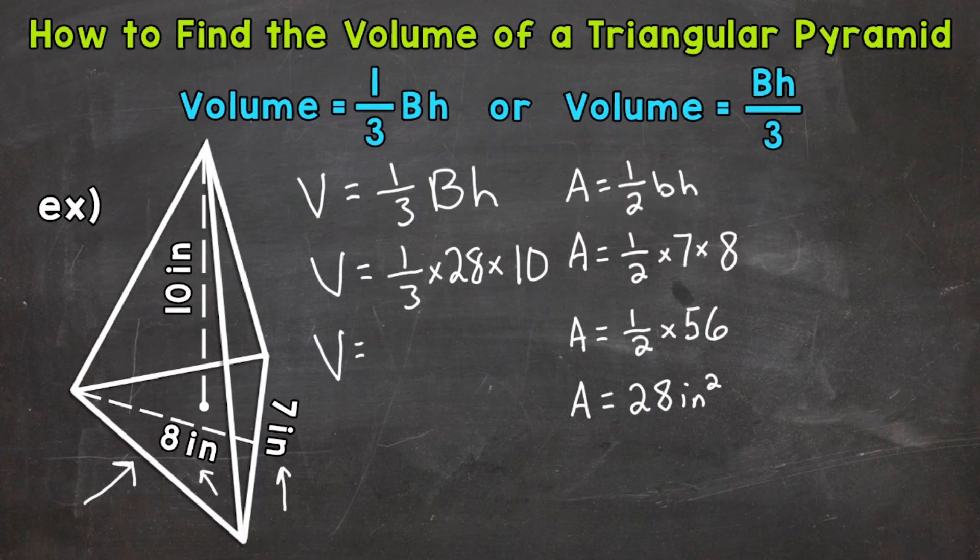So let's break this down. And we'll do 28 times 10 first. 28 times 10 is going to give us 280. And we'll wrap this up with 1 third times 280 or 1 third of 280. And that gives us a final volume of 93. And I'm going to round this decimal to the nearest hundredth. So 33 hundredths.